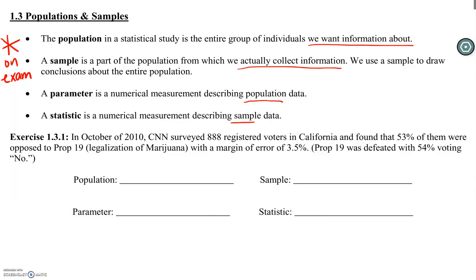I want you to read through the next question and try to identify: what was the population (the group we wanted to know about), who was the sample (the group they actually collected data from), what was the measurement from the population, and what was the measurement from the sample. Take a moment, pause the video, read through this, and decide.